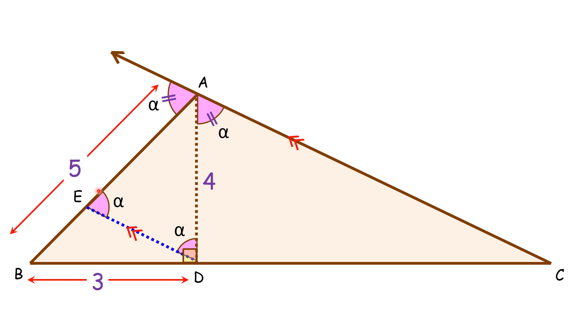If we consider triangle AED, it is an isosceles triangle, and thus AD and AE will be equal, or AE will be 4 centimeters. EB will be 5 minus 4, or 1 centimeter.